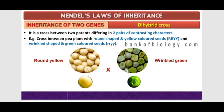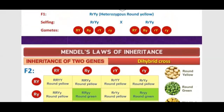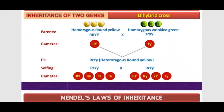It has taken the pure line — pure line means homozygous parents, not heterozygous. True breeding is taken. So capital R capital R capital Y capital Y for one parent, and homozygous small r small r small y small y for the other parent.